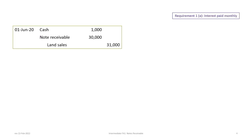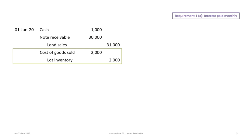Our first journal entry is dated June 1st. There is a cash down payment of $1,000 and a note receivable, so the land sales is simply the sum of the cash down payment and the note receivable. Accompanying most sales entries, there should be an entry for cost of goods and lot inventory, presuming that the company purchased the lots, recorded them as inventory, and is now recording them as cost of goods.